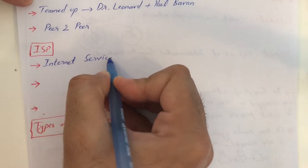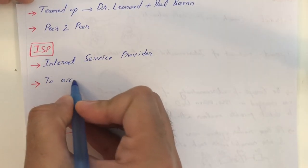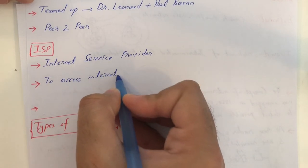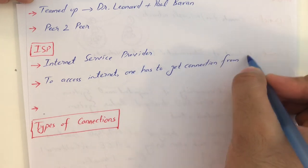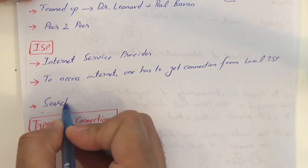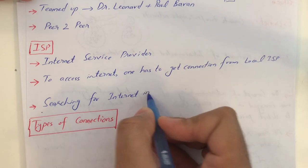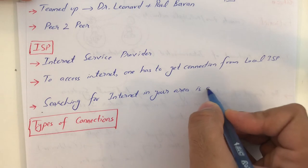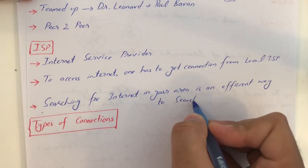Next is the ISP — Internet Service Provider. In order to access the internet, one has to get a connection from a local ISP. Another way to find an ISP is by searching for internet service in your area, which is an efficient way to search for an ISP.